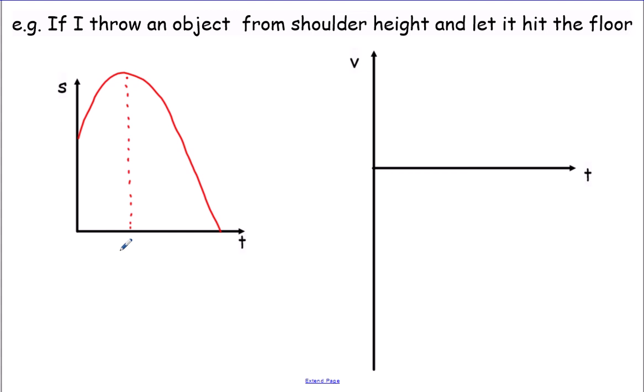Key features of the displacement-time graph: initially the ball has a lot of velocity so height changes quickly, giving a steep slope. As velocity decreases approaching maximum height the curve flattens. At the very top the gradient is zero because v = 0, and velocity is the gradient on a displacement-time graph. On the way back down the gradient becomes increasingly steep (negative), with the steepest point just before impact — the maximum velocity.